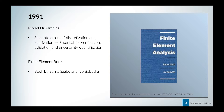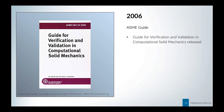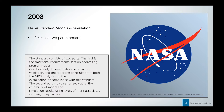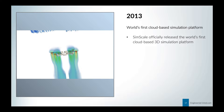In 1991, people were discussing and developing model hierarchies with separate errors of discretization and idealization, which is essentially important for verification, validation, and uncertainty quantification. A finite element book also came out from Szabo and Babushka. We jump to 2006, where the American Society of Mechanical Engineers released a guide for verification and validation in computational solid mechanics. Two years later, NASA released the standard for models and simulation. And in 2013, we have the world's first cloud-based simulation platform called SimScale.